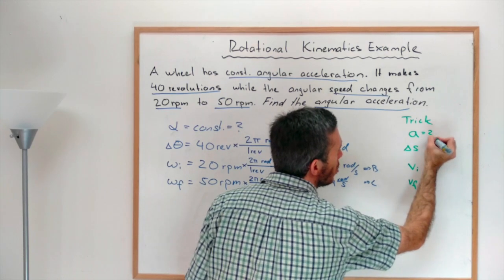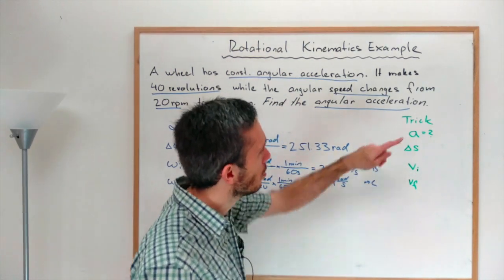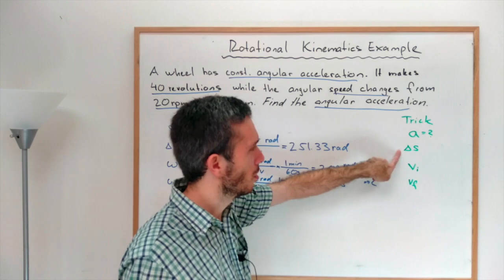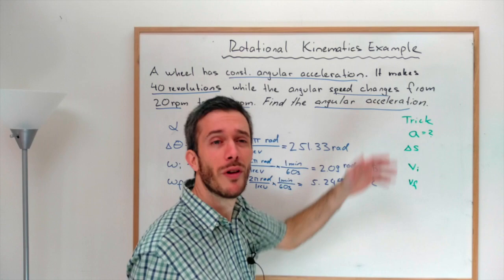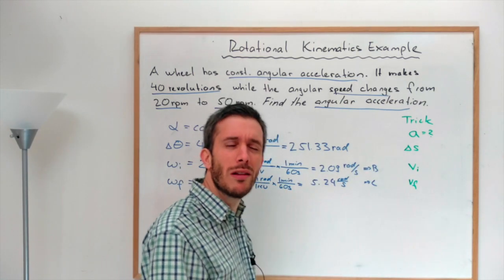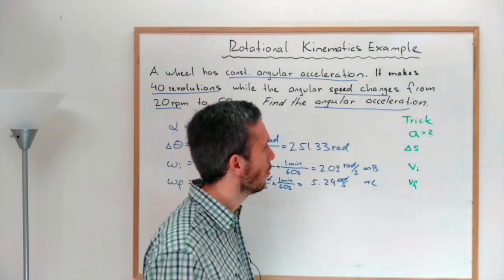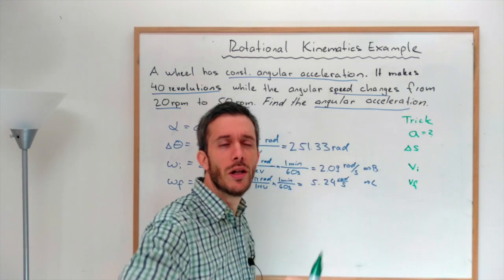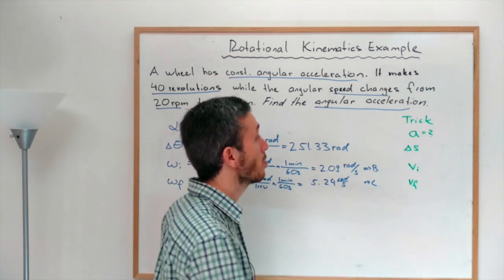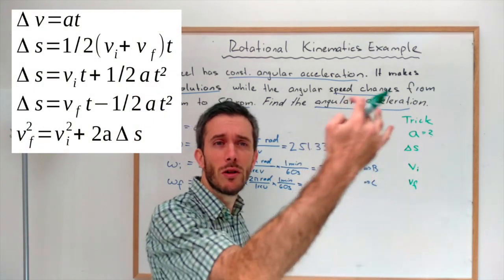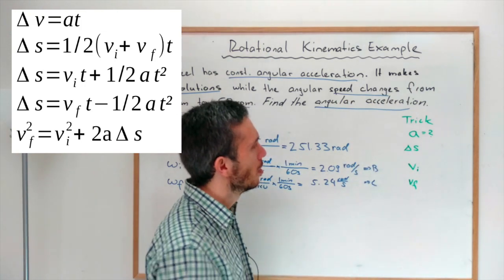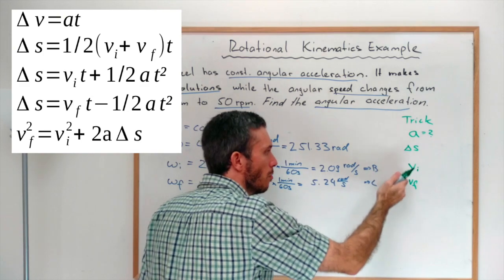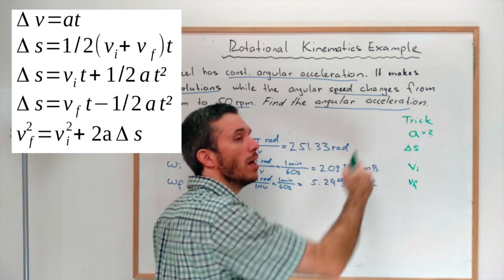So the question is if we know that the acceleration is constant, and we have a certain change in position, we have initial and final speed, we want to find the acceleration. What kinematics equation could have given us that? There are five kinematics equations for constant acceleration. Now we just go through the list of them and pick the one that has what we are given as well as the unknown.